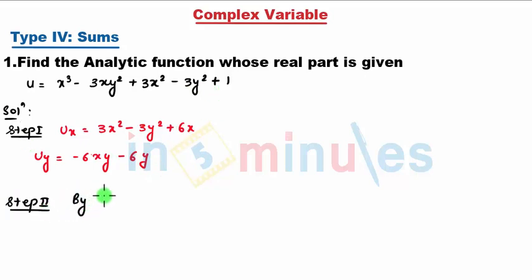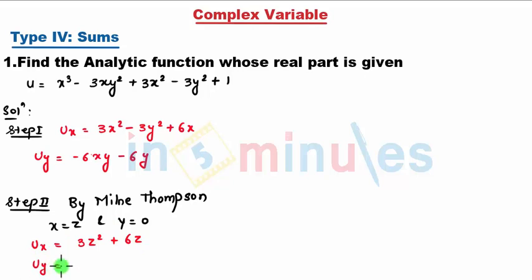Step 2: By Milne Thomson, x = z, y = 0. So I get u_x = 3z² + 6z and u_y = 0 as y is 0. Both terms are 0, so u_y = 0. We did with Milne Thomson.